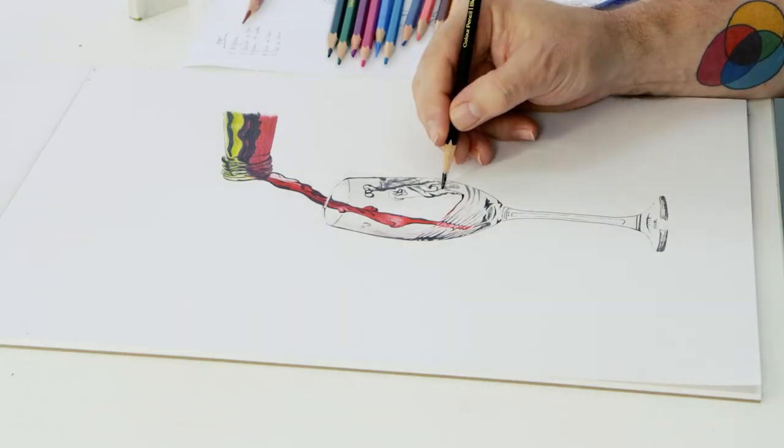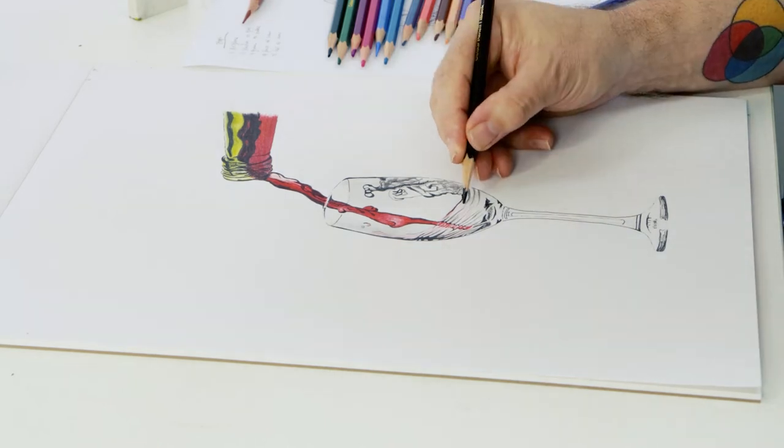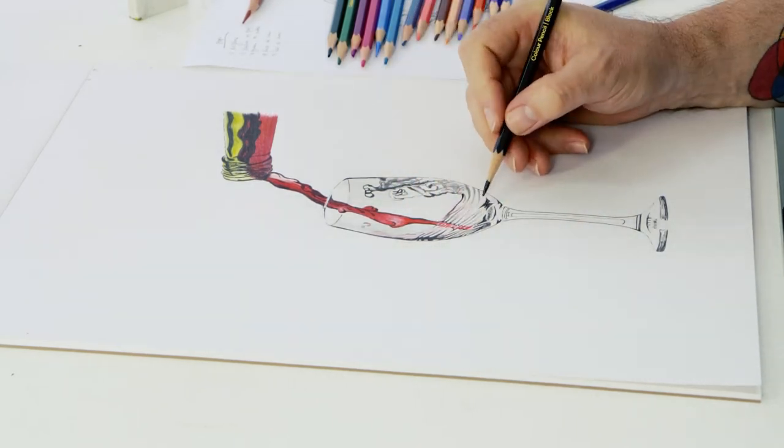It's always best to lay the darks of the shadows down first and then put color over the top as it gives some warmth to the black.